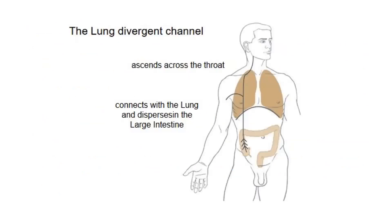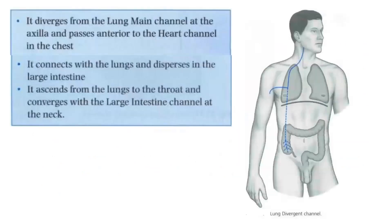Here is a simplified illustration of the lung divergent channel. It connects with the lung and disperses in the large intestine and ascends across the throat. It diverges from the lung main channel in the axilla, passes anterior to the heart channel in the chest, connects with the lungs and disperses in the large intestine, ascends from the lungs to the throat, and converges with the large intestine channel at the neck.